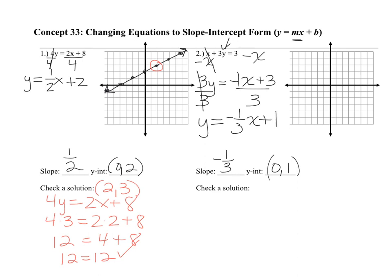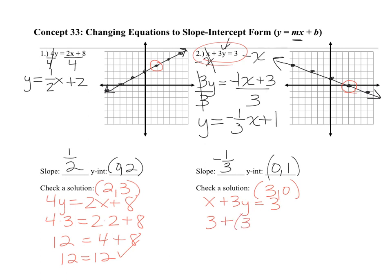When you graph it, start at (0, 1) — since slope is negative, go down 1, right 3. Or instead, go up and to the left. To check, pick an ordered pair on the line. I'll pick (3, 0) and plug into the original equation x + 3y = 3: substituting gives 3 + 3(0) = 3, so 3 = 3. It works. As a quick reminder, that solution (3, 0) is your x-intercept.